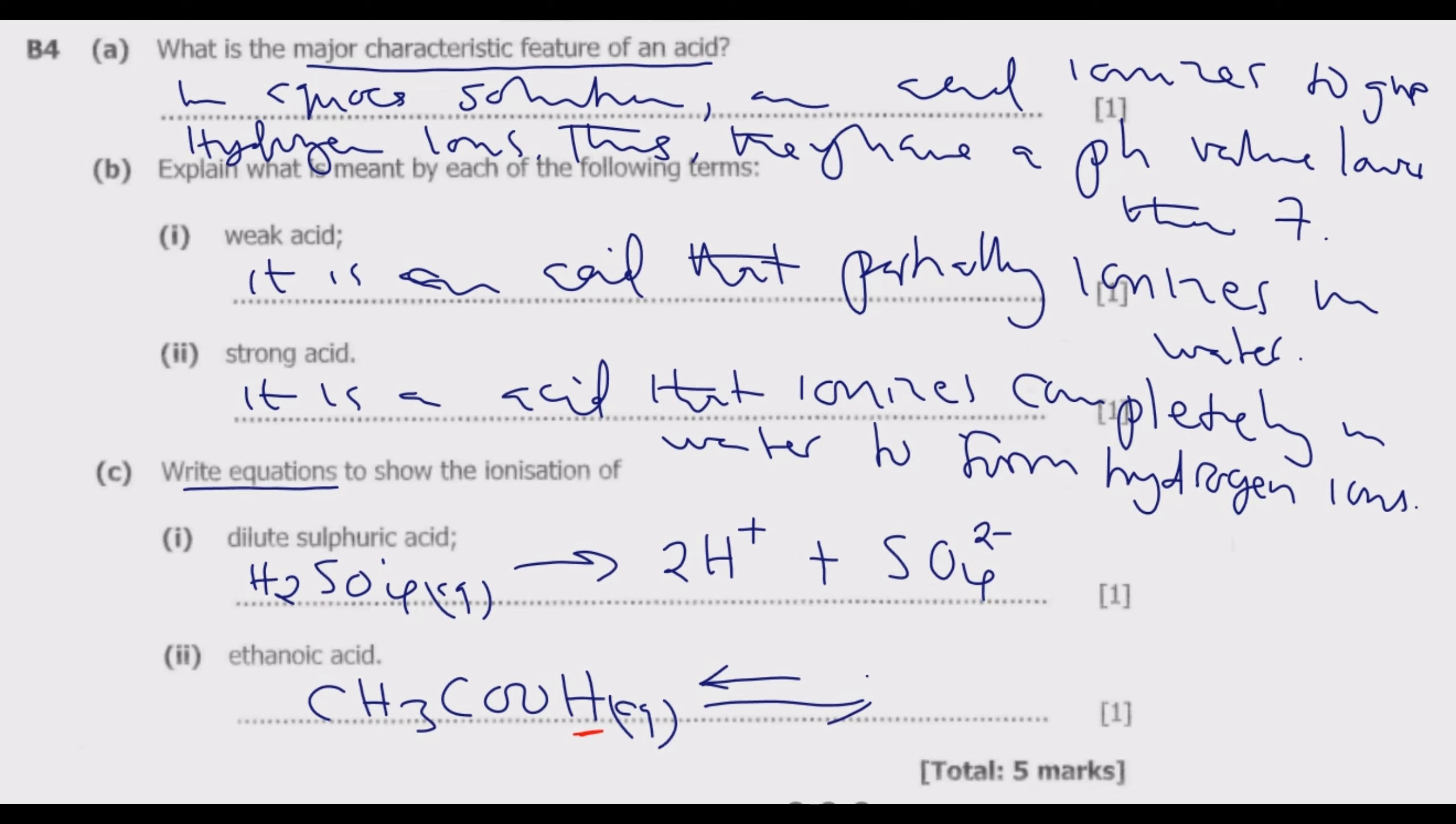The hydrogen is going to split, so we have a hydrogen ion H+ in the aqueous state. Then we have CH3COO- as an ion. This is what we mean by partial ionization—the reaction is reversible. This is how you answer this question to get the five marks.